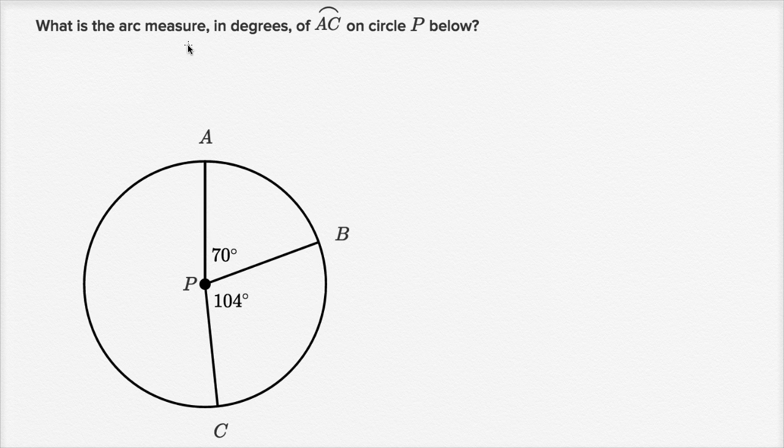So this first question says, what is the arc measure in degrees of arc AC on circle P below? So this is point A, that is point C. And when they're talking about arc AC, since they only have two letters here, we can assume it's going to be the minor arc.